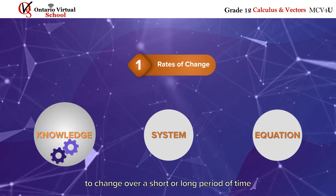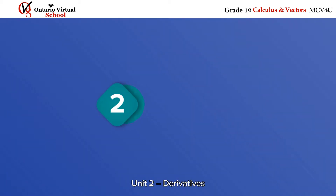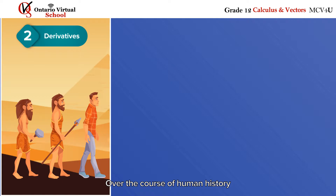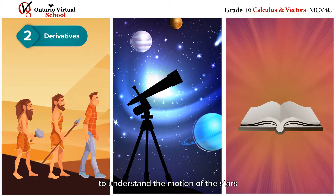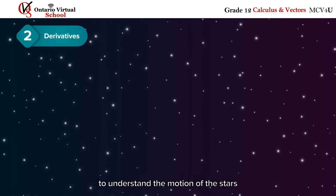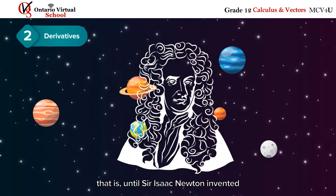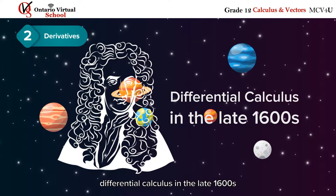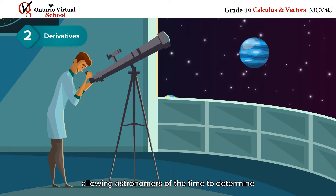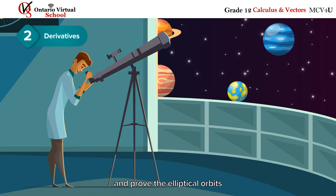Unit two: Derivatives. Over the course of human history, astronomers and philosophers have attempted to understand the motion of the stars and planets — without success — that is, until Sir Isaac Newton invented differential calculus in the late 1600s, allowing astronomers to determine the elliptical orbits of our nearby planets and stars.